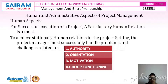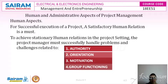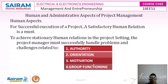For the successful implementation of the project, satisfactory human relationships between top management, middle management, and lower management is a must. To work in a team there should be chemistry that makes success come with hard work. To achieve this, the project manager has to work with the team, understand the limitations of each human being involved, and handle problems and challenges successfully. The project manager has to have four qualities: authority, orientation, motivation, and group functioning.